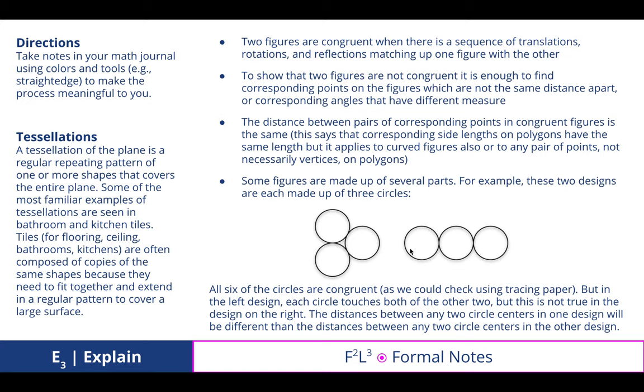Some figures are made up of several parts. For example, in these two designs of the circles, they are both made of equal circles, but each of those six circles, while congruent, make up two different designs and therefore are not congruent in their totality.